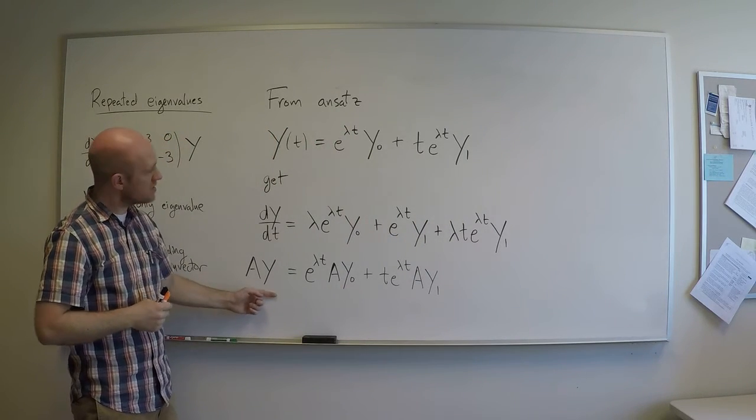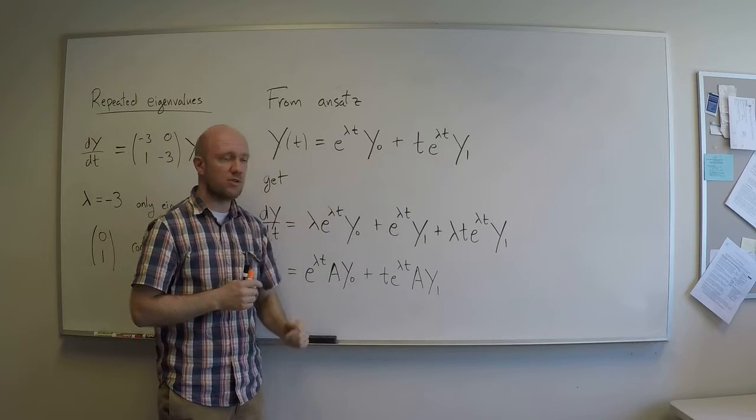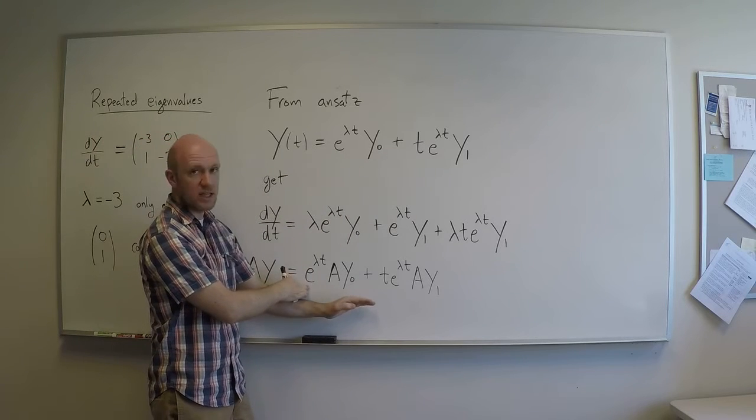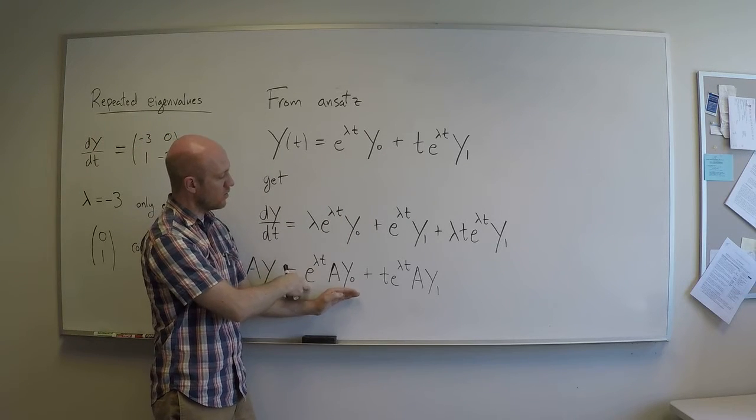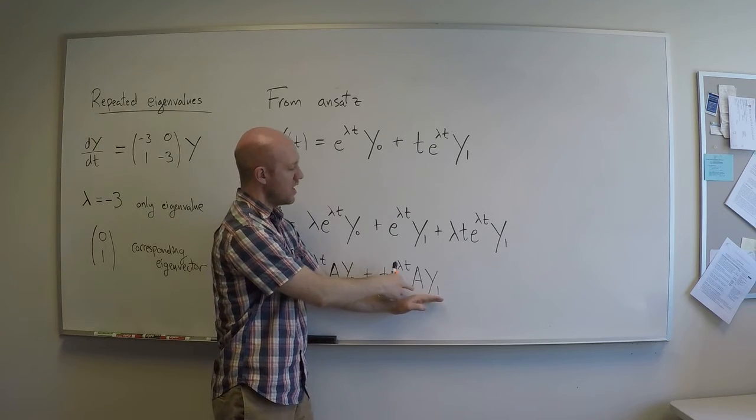Second part is A times y. That's a little easier. I just multiply through the whole thing by A, and I get e^(λt)Ay0 plus t*e^(λt)Ay1.